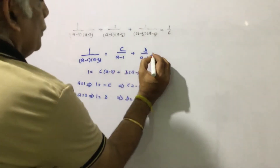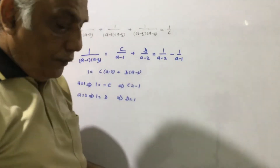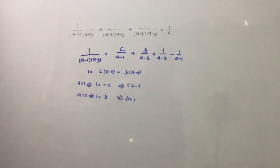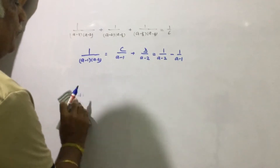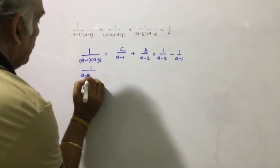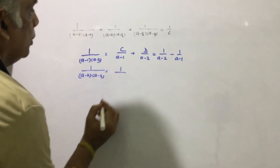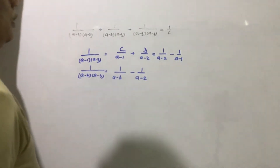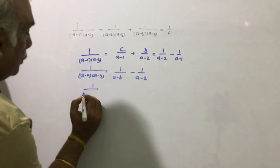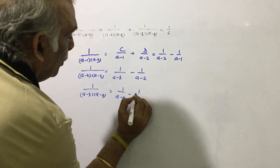So we can write the first term as 1 upon (a minus 2) minus 1 upon (a minus 1). Similarly, the second term 1 upon (a minus 2)(a minus 3) equals 1 upon (a minus 3) minus 1 upon (a minus 2). And we can write the third term 1 upon (a minus 3)(a minus 4) equals 1 upon (a minus 4) minus 1 upon (a minus 3).